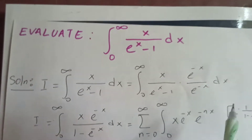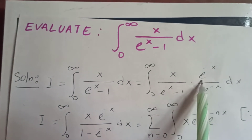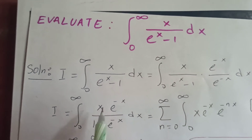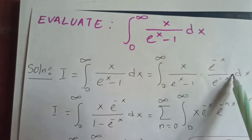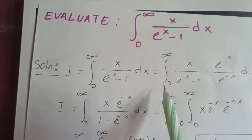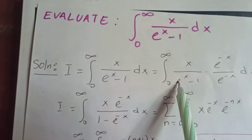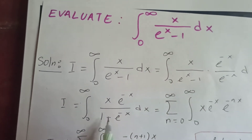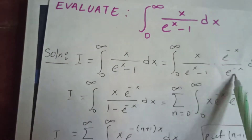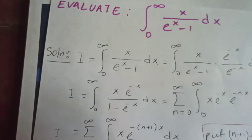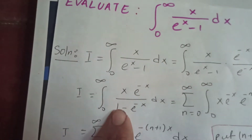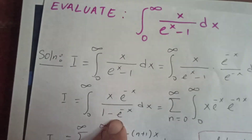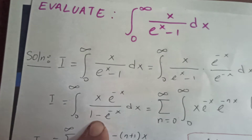Since we multiply both numerator and denominator by e^(−x), we get e^(−x) times eˣ, which by the exponential law is just one. The denominator becomes 1 minus e^(−x), which is nothing but the geometric series.